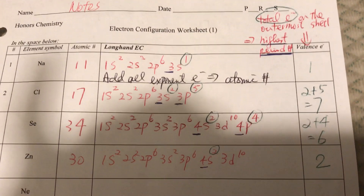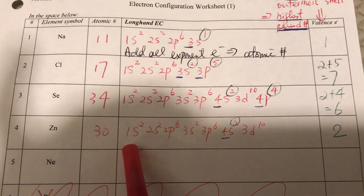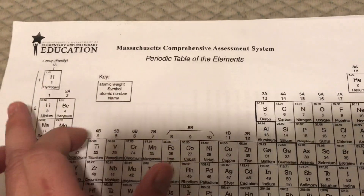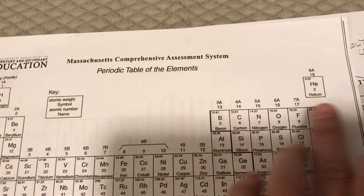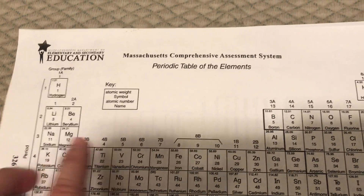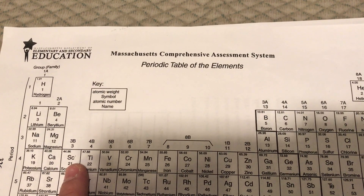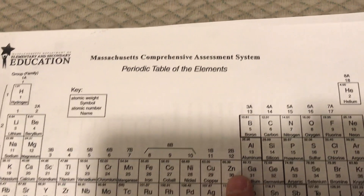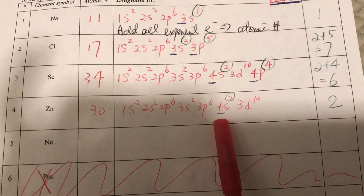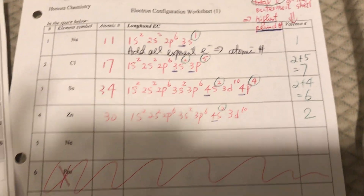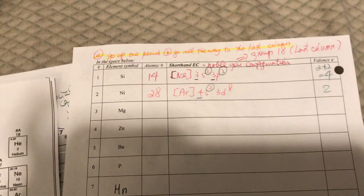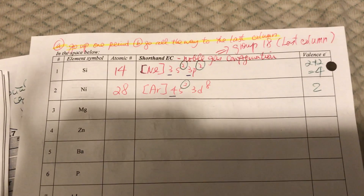One more: zinc is number 30. Its configuration is one s two, two s two, two p six, three s two, three p six, four s two, three d ten. The highest energy level is four, so zinc has two valence electrons.